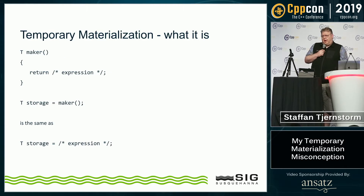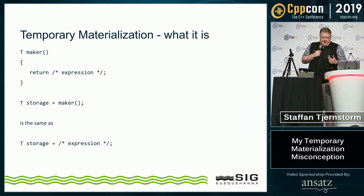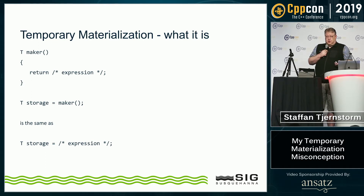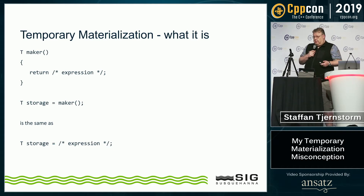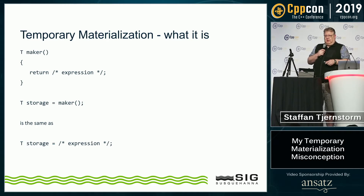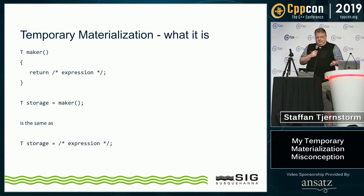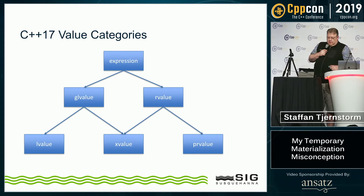Temporary materialization — for those watching on YouTube, since I'm sure that everybody here in the room knows exactly what it is — is fairly simple. In C++17, if you have a function that returns an expression by value, so a factory, and you assign that return into a variable of that type, then it's exactly the same as though you just assigned the result of the expression into that variable. The return path just doesn't exist.